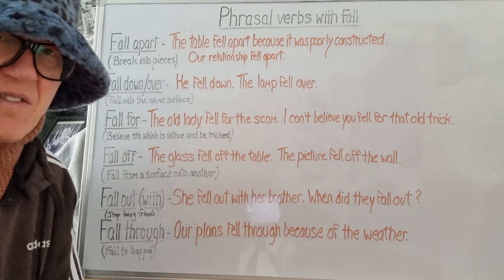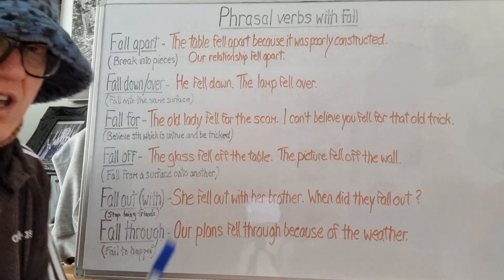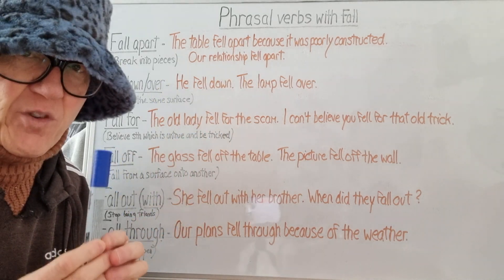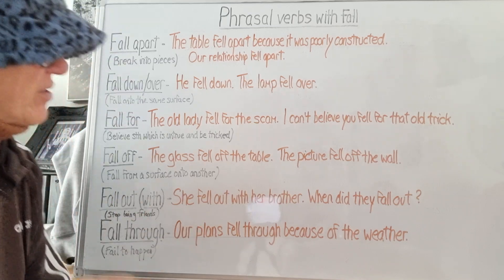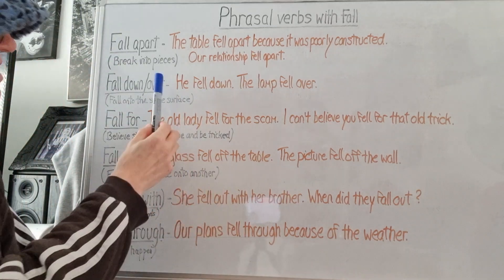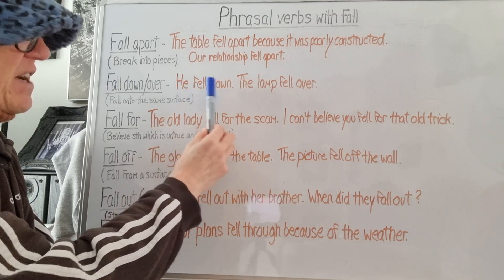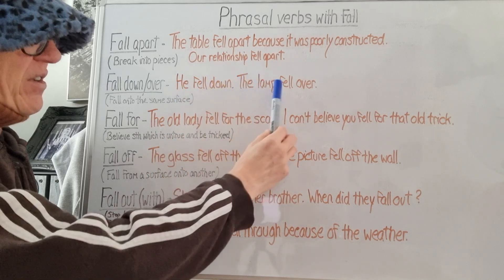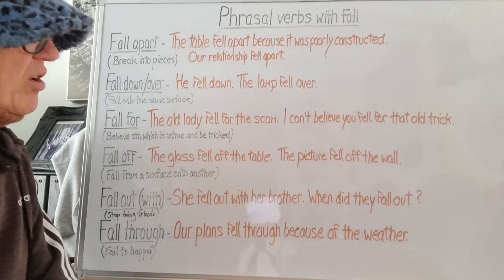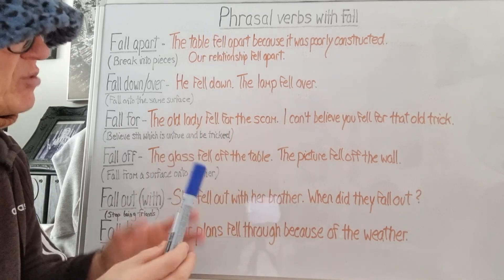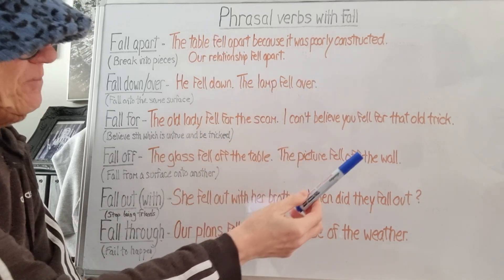The reason I'm making that distinction is because you also have 'fall off,' which is to fall from one surface onto another surface. So you can use 'he fell down' or 'he fell over,' but for objects, 'over' is more common — though there's no actual rule. The lamp fell over.